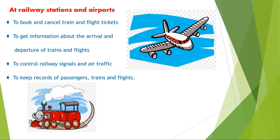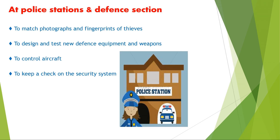Computers are also used at railways and airports. They are used to book tickets, to get information about arrival and departure of trains and flights, and to maintain the records of passengers, trains, and flights.